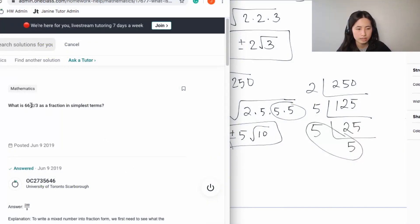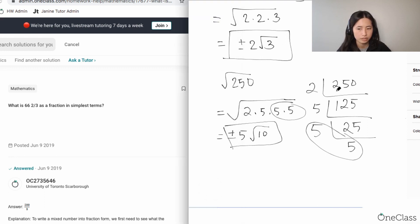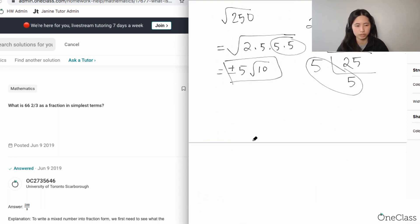What is 66 and 2 over 3 as a fraction in simplest terms? If you have a mixed number—this is 66 and 2 over 3—when you're trying to simplify fractions, it's easier when they're expressed as improper fractions.